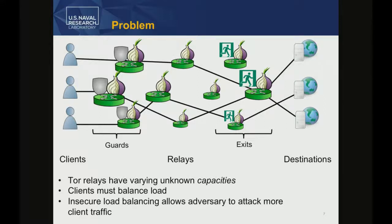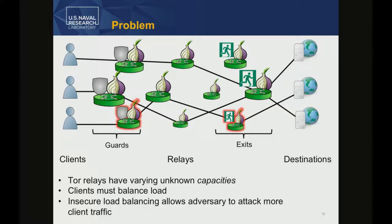If you just trust the relays to tell you how much bandwidth they have, it allows an adversary to attack a lot of client traffic without expending many resources. For example, if you're running on a $50/month consumer connection but convince the network you're on a 10-gigabit line, you attract a lot of client traffic. As a red guard you can do website fingerprinting or build a list of TOR users. As an exit you can see what people are visiting or modify unencrypted traffic. Worst, if you're in both positions, you can use timing correlation attacks to link the client with the destination.